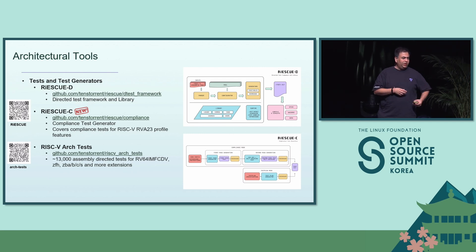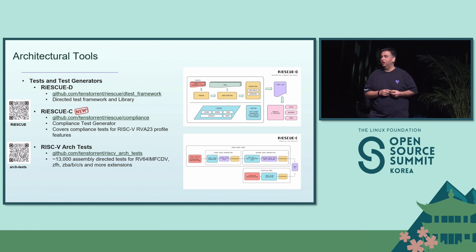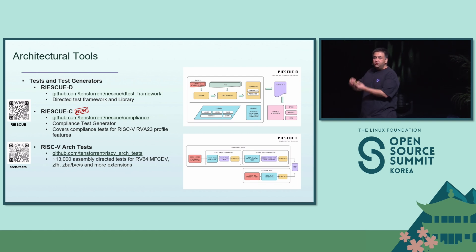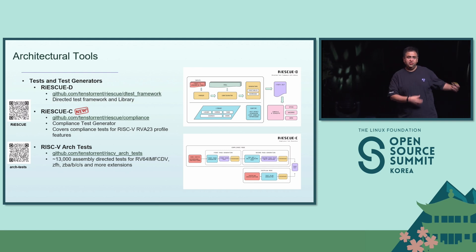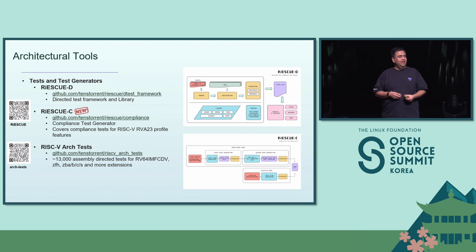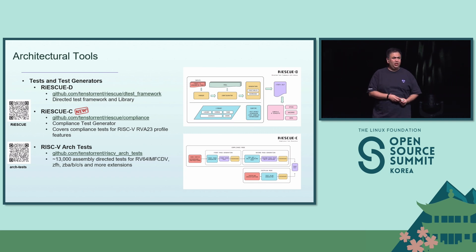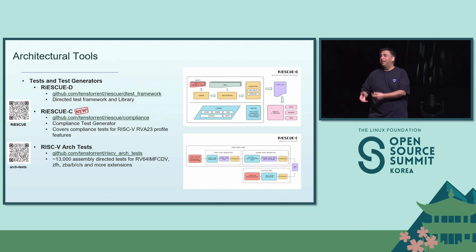We recently released an entire stimulus generator, including tests, for RISC-V compliance. Anybody working on RISC-V — whether you're building a small RV32-based core or a large RV64-based core, whether it's for embedded cores or an FPGA — you can just download this. There are about 20,000 different test cases including source code that you can deploy and validate your designs.